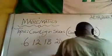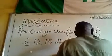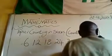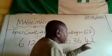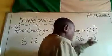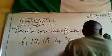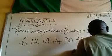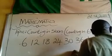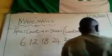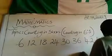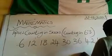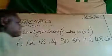When I add six to this thirty-six, the answer is forty-two. When I add six to this forty-two, the answer is forty-eight. Etc.